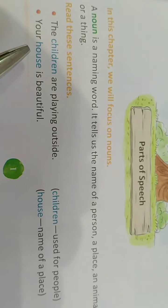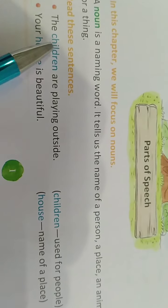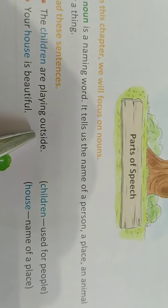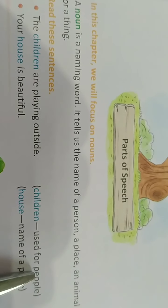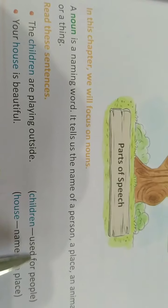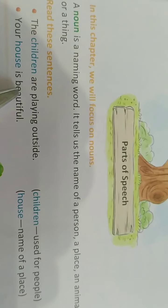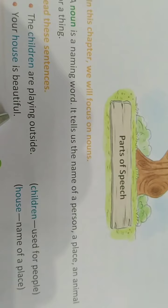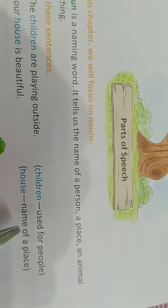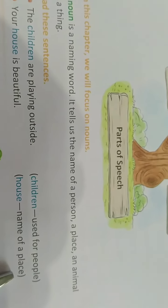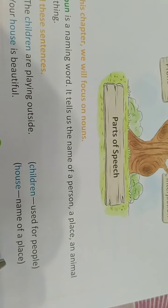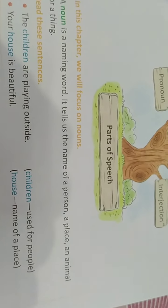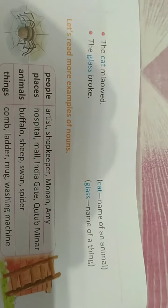Here, some examples are given. You can see: 'The children are playing outside.' Here, children are used for people, that is a person. 'Your house is beautiful.' Here, house is the name of a place. As we know, noun is the name of a person, place, animal and thing. Here, in the next page, we will read about animal and thing.